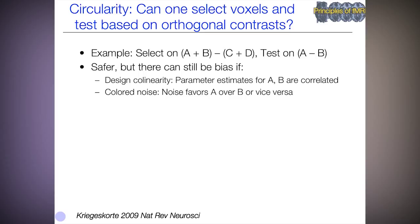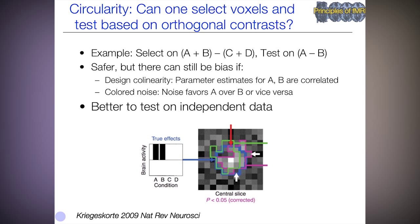But there can still be bias if you test on the same data. Why? Because the design matrix regressors for A, B, C, and D can be correlated and that can produce effects. Also, the noise might be autocorrelated, so noise characteristics might also create a selection bias. So we do have to be careful even when applying orthogonal contrasts. It's better to test on independent data.